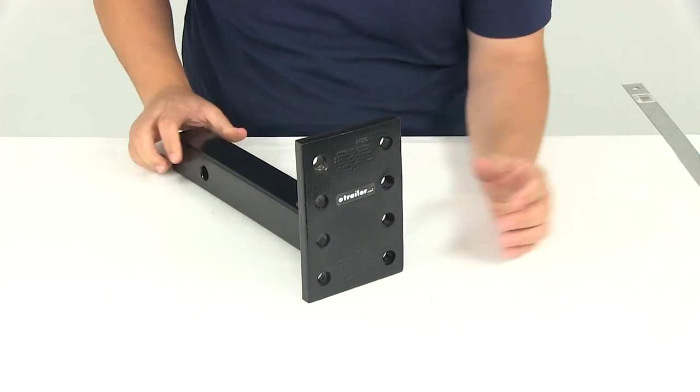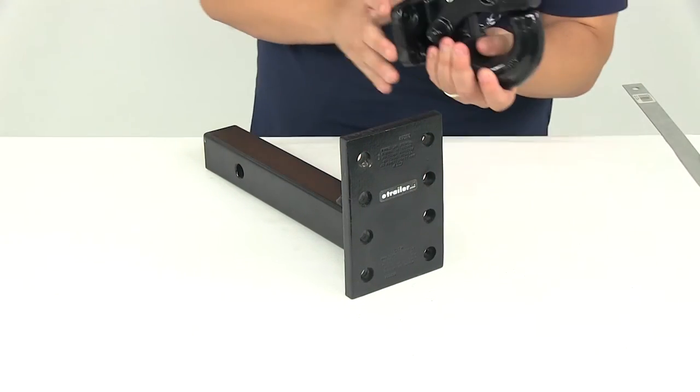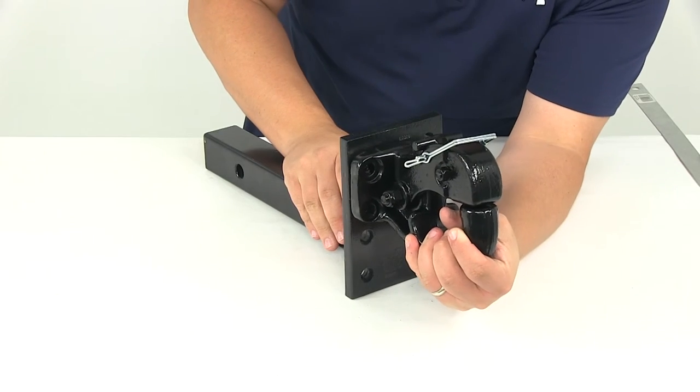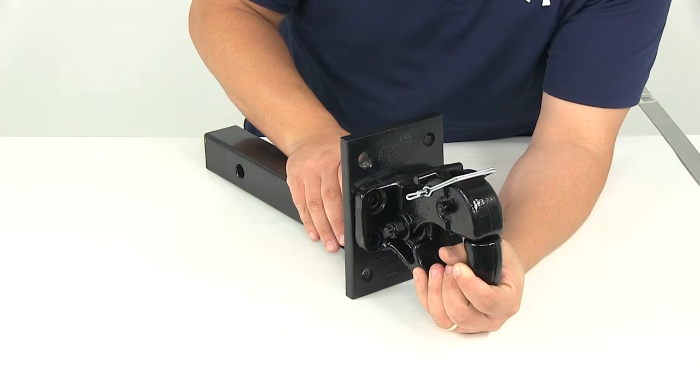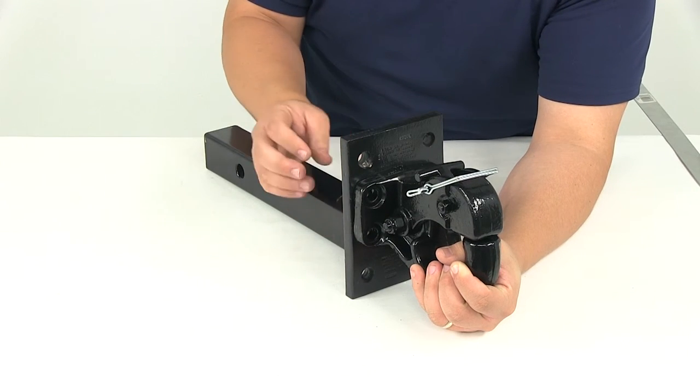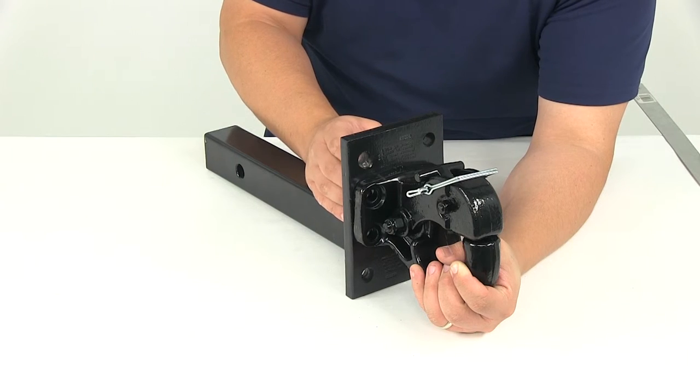It's really simple to attach a pintle hook to. All you have to do is take your pintle hook—and these are going to be sold separately—and then you just have to line it up with the set of holes that you want to use, place all your hardware through, and then secure it with the lock washer and the nut on the back of the bolt.